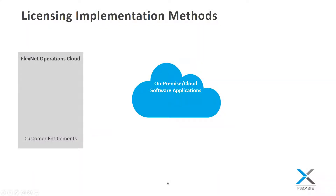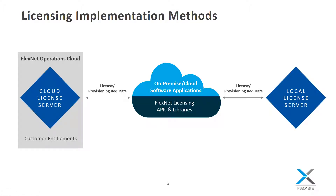Traditionally, on-premise and cloud software applications have been licensed using a provided toolkit containing a set of libraries and APIs based on the target platform and development environment for the application. The applications are then instrumented with the APIs to support the desired licensing or usage models and are then compiled along with the licensed libraries. When either local or cloud-based license servers are in use, the applications then request licenses from or post usage to the designated server.